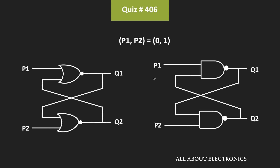Similarly, for this NAND gate based latch, the inputs are 0 and 1. For the NAND gate, when any of the inputs is 0, then its output will be equal to 1. So since P1 is equal to 0, its output Q1 will be equal to 1, and the same 1 will also appear at the other gate. That means both inputs to the second NAND gate are 1, and therefore its output will be equal to 0. So for this NAND gate also, initially the outputs are 1 and 0. That means whenever P1 and P2 are 0, 1, then for both latches, initially the outputs are 1 and 0.